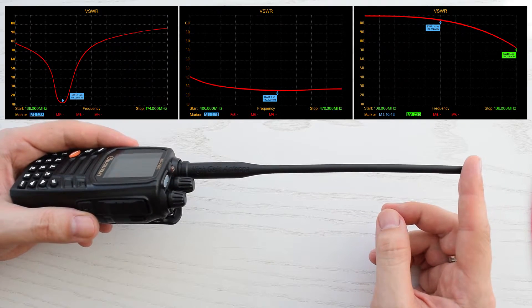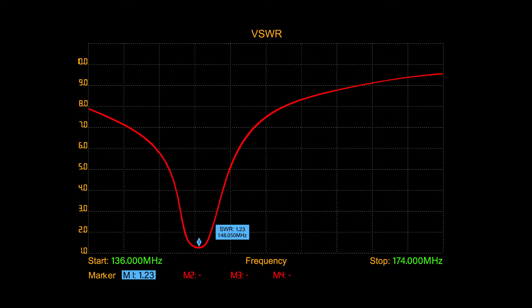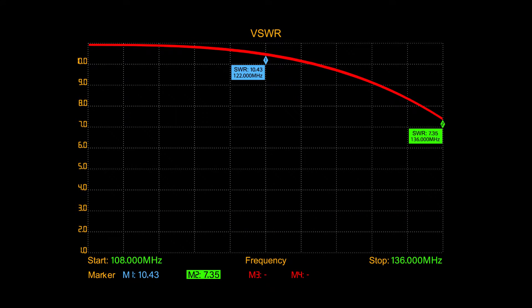I also checked SWR of this antenna and we have 1.2 at 148MHz, which is pretty good, and we have SWR 2.4 at 440MHz. So it's not ideal antenna for the 70cm band. And as you can see, almost useless for the air band.